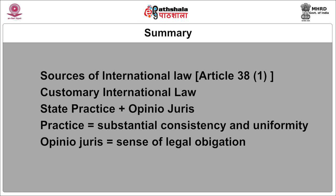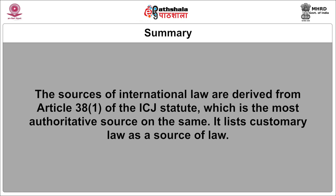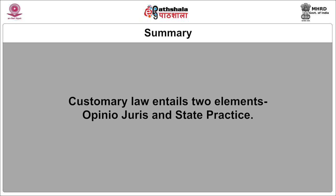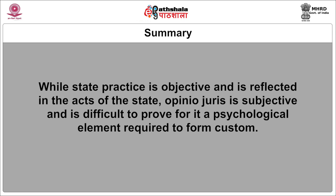Now the summary. Sources of international law: Article 38.1. Customary international law — state practice and Opinio Juris. Practice requires substantial consistency and uniformity. Opinio Juris equals the sense of legal obligation. The sources of international law are derived from Article 38.1 of the ICJ statute, which is the most authoritative source. It lists customary law as a source of law. Customary law entails two elements: Opinio Juris and state practice. While state practice is objective and is reflected in the acts of the state, Opinio Juris is subjective and is difficult to prove, for it is a psychological element required to form custom.